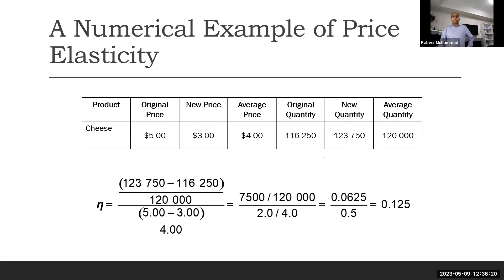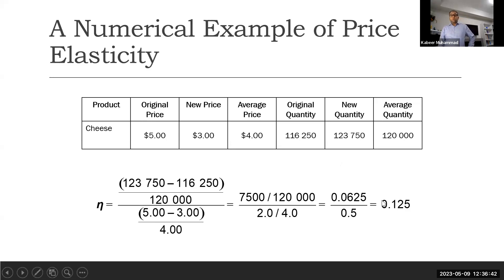To calculate the percentage change in quantity demanded: (123,750 − 116,250) / 120,000. This is divided by the percentage change in price: (5 − 3) / 4. By this calculation, we get the value 0.125. The value is less than 1, so we can say that the demand is inelastic in nature.